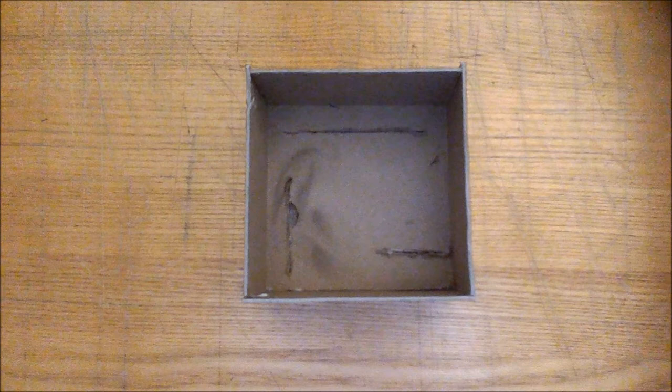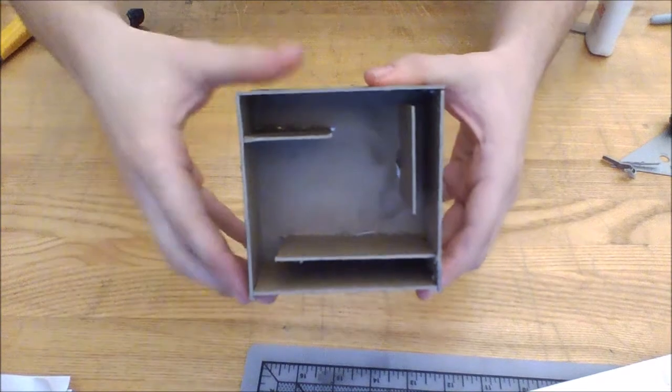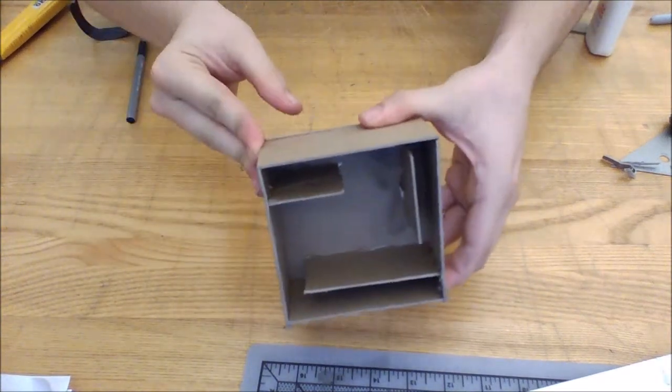I have imitated this in my model by cutting slots here, here, and here. Now when I push on it, it is just as rigid as the one with the top, but why?